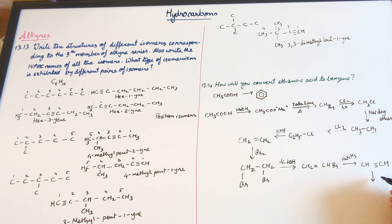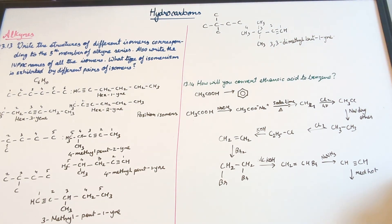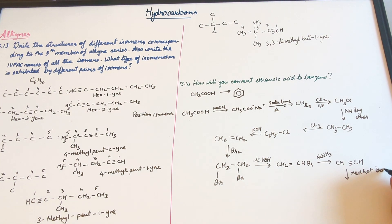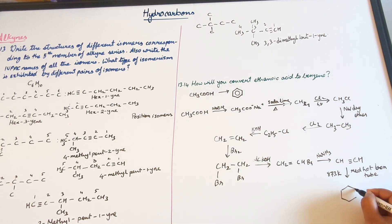Now this is going to undergo a reaction with red hot iron tube at 873 Kelvin to give us benzene.